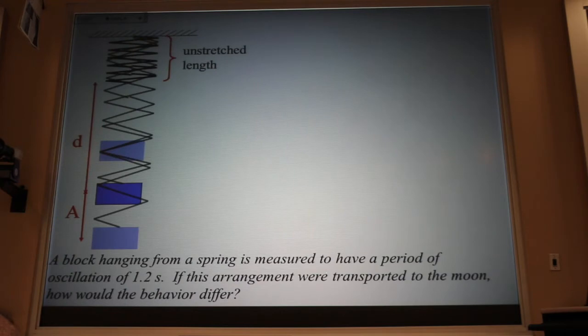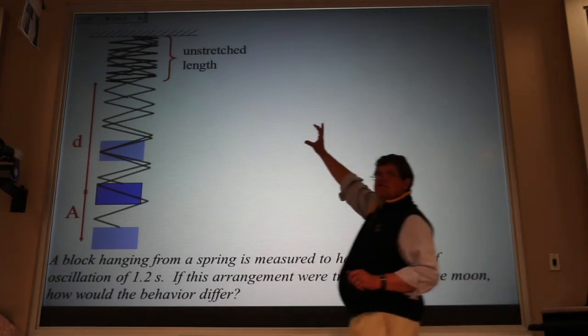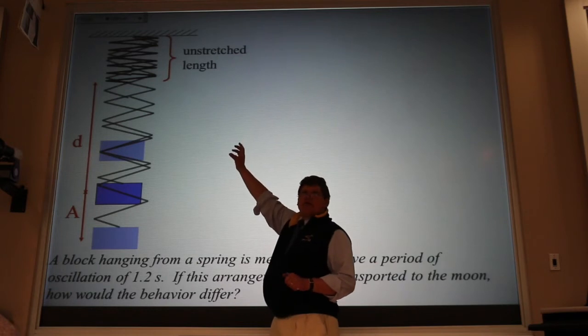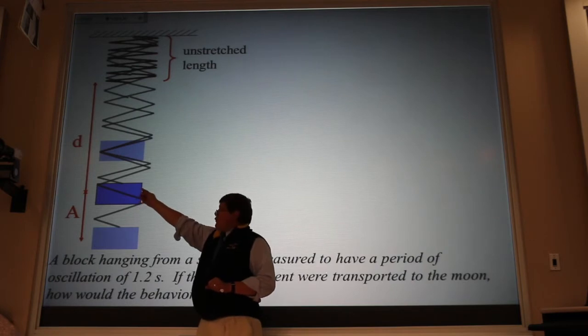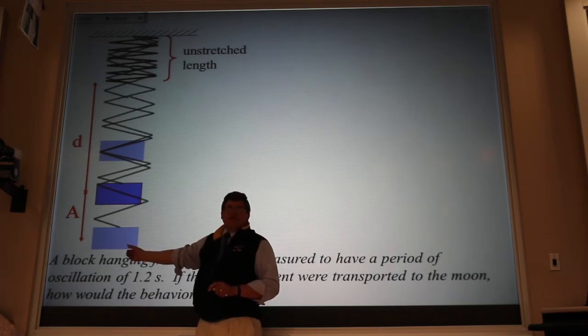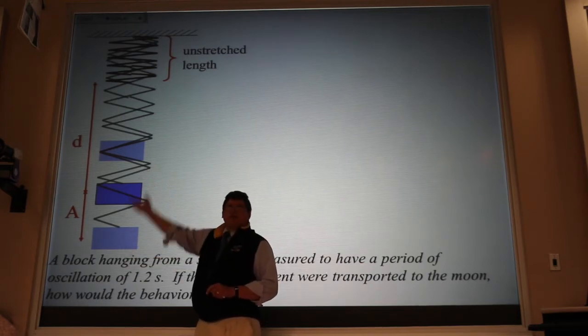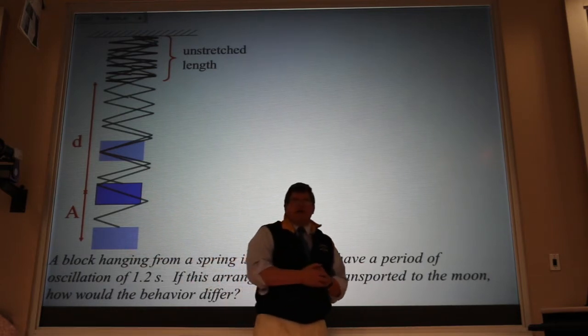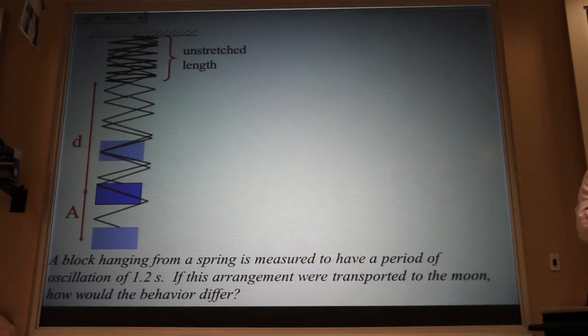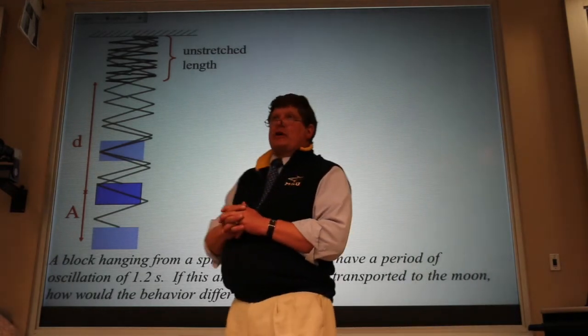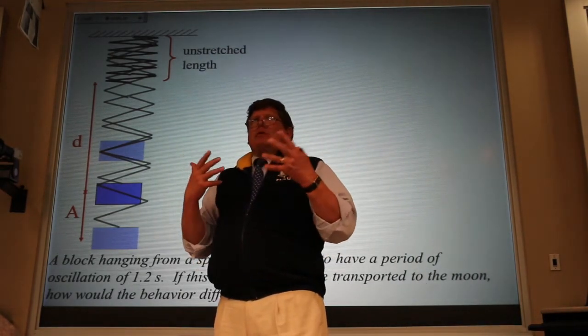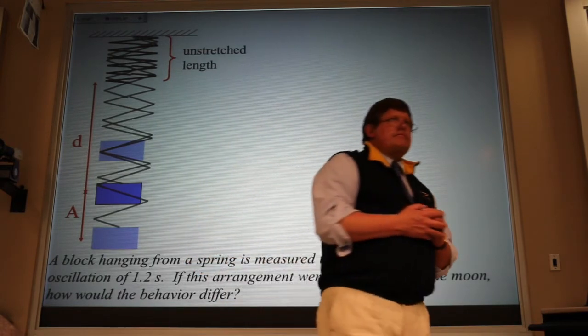Let's do a thought experiment, because we don't have the money to do it in real life. We have this spring of some unstretched length. We attach a block of mass M to that spring, and it stretches down to this new equilibrium point. We then pull it down a distance capital A, the amplitude, and let that bounce up and down about that equilibrium. It bounces with a period of 1.2 seconds. We then take this device to the moon, where the gravitational field strength is one-sixth as big as it is on Earth, and we ask ourselves, what stays the same and what changes?